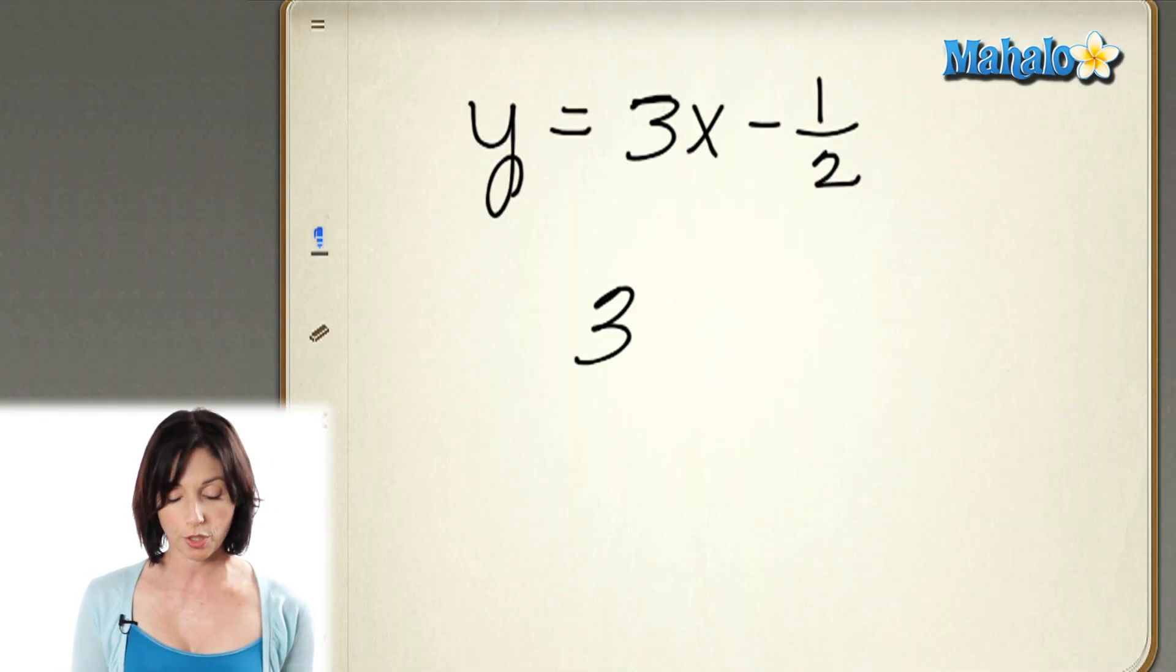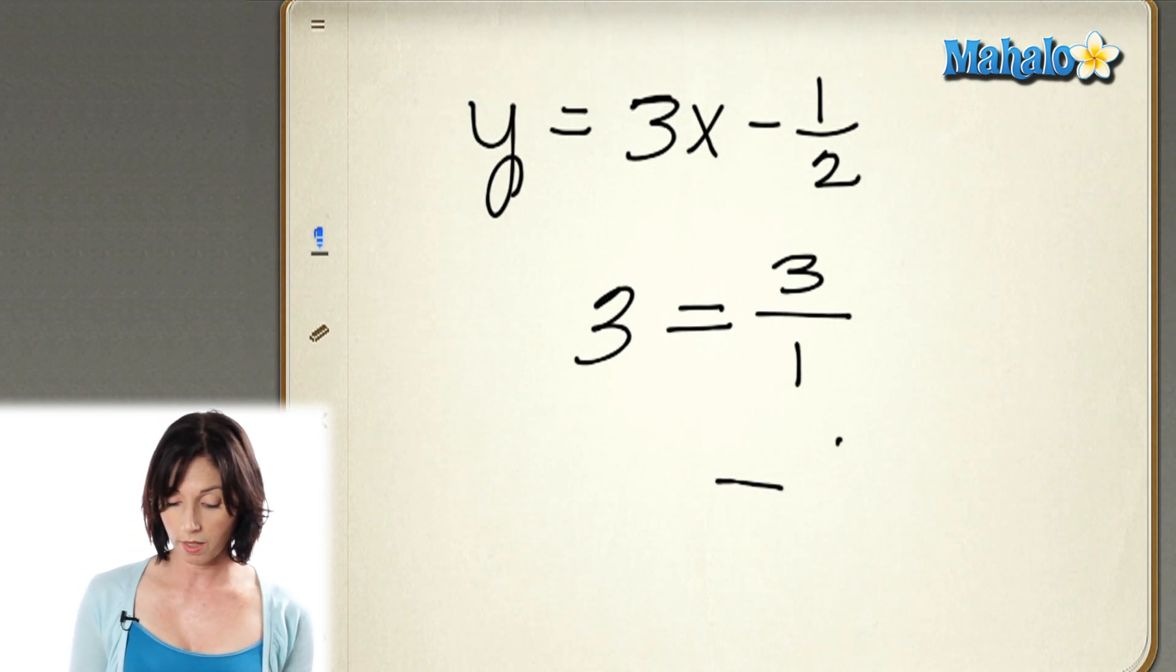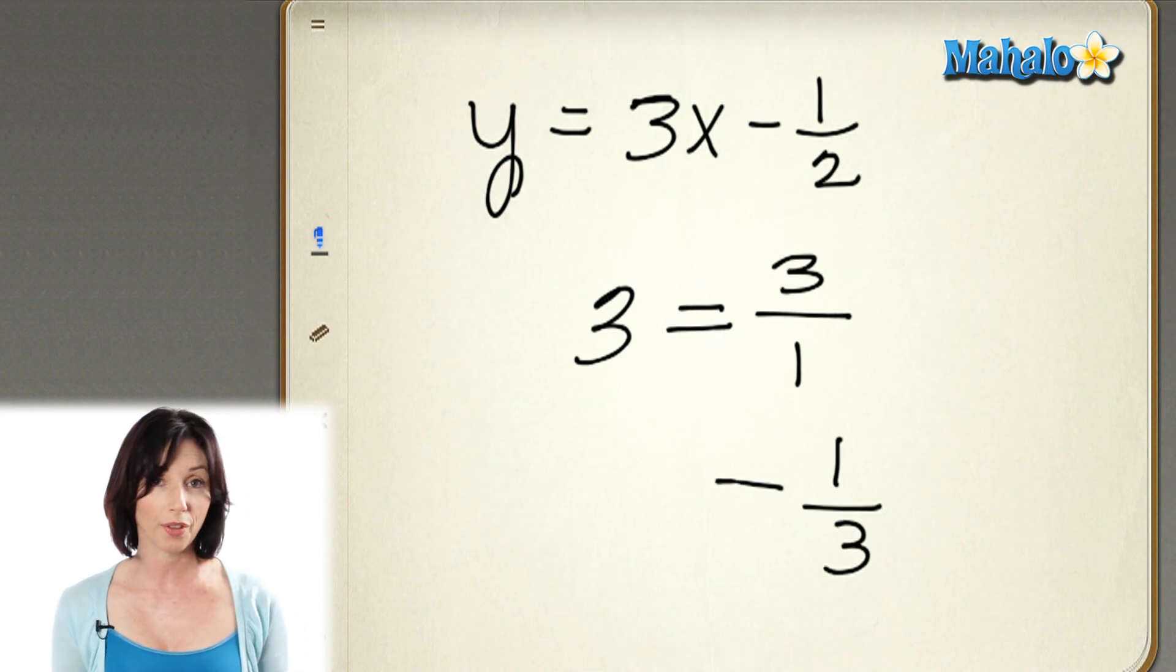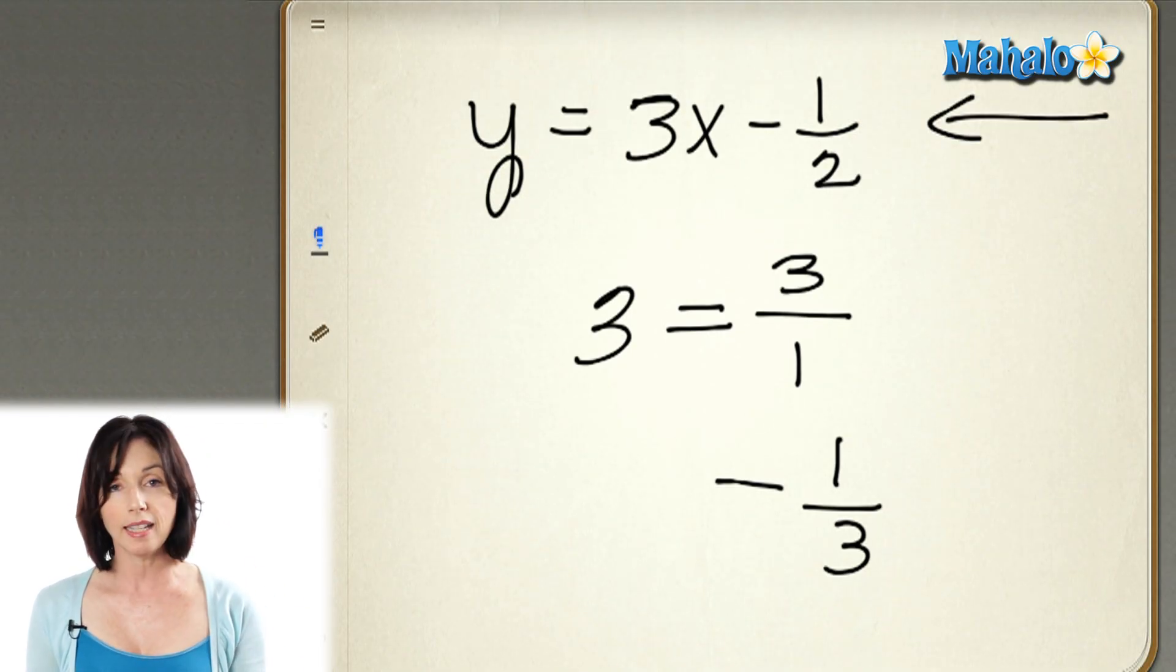So, my slope here is 3. I'm going to rewrite that as 3/1. Now, if I want to find its negative reciprocal, I'm going to change the sign. This is positive, so I'm going to make it negative. And flip it upside down. So, instead of 3/1, I have 1/3. So, the slope of a line that is perpendicular to this line here will be negative 1/3.